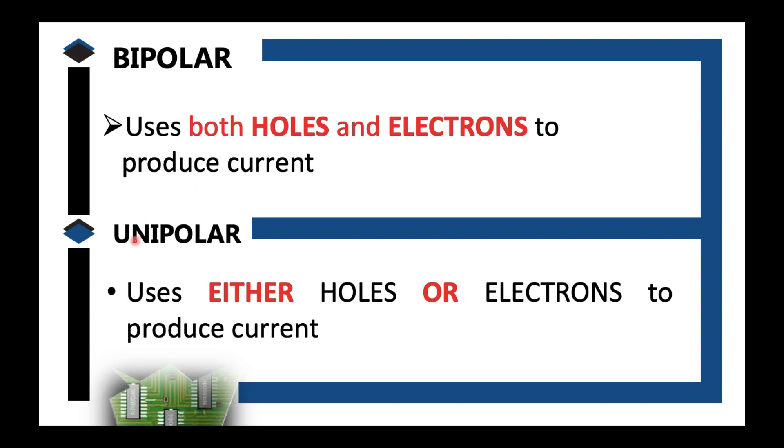Look at bipolar, it means two. So two charge carriers: the holes and electrons. Unipolar, so one charge carrier. If holes are used, only holes. If electrons are used, only electrons. Bipolar uses both holes and electrons to produce current. I hope that's clear to you.